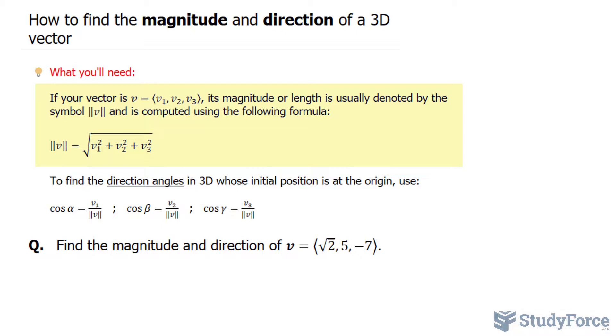If the vector, let's say V is equal to V1, V2, and V3, in other words, those are the coordinates of that vector, or its components in X, Y, Z,